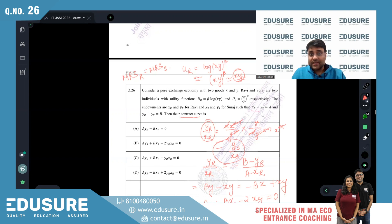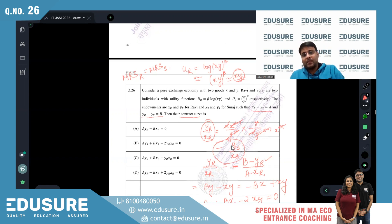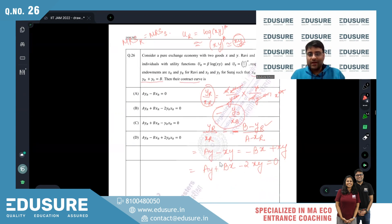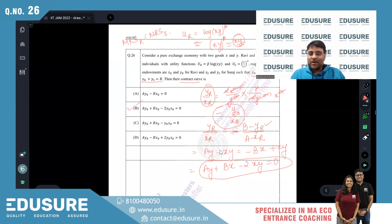Since xr + xs = a and yr + ys = b, we substitute ys = b - yr and xs = a - xr. Cross-multiplying gives the result: ay + bx - 2xy (dropping the r subscript since everything refers to Ravi). The answer is option B.